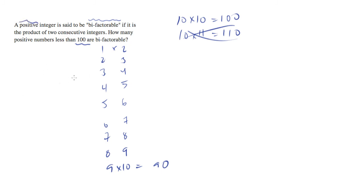So let's just count these and see how many there are. There's 1, 2, 3, 4, 5, 6, 7, 8, 9 of them. So 9 will be your answer.